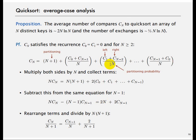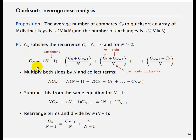C(N) is the number of compares to Quicksort an array of N distinct keys. This is the most important equation. After establishing it, the rest is mathematical manipulation to arrive at the N log N complexity.